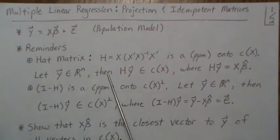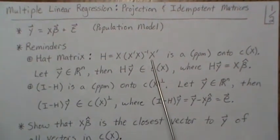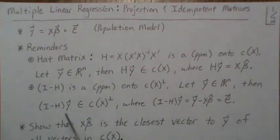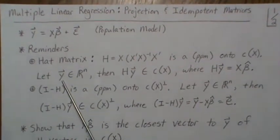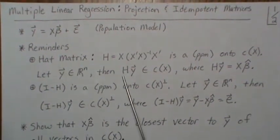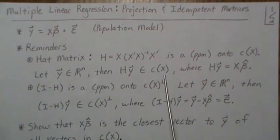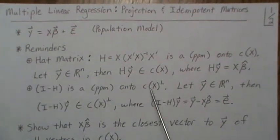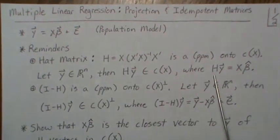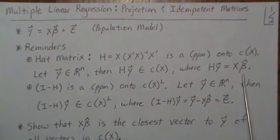The hat matrix is H, which is X(X-transpose X)-inverse X-transpose. It's a perpendicular projection matrix onto the column space of X. So if we let Y be any vector in our n-space and pre-multiply it by the hat matrix, it projects it down into the column space of X — which is pretty amazing. So HY gives X-beta-hat, the least squares estimate of beta.